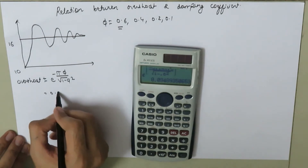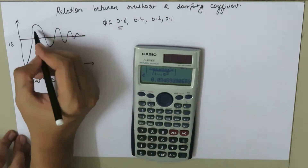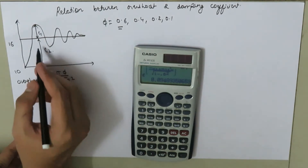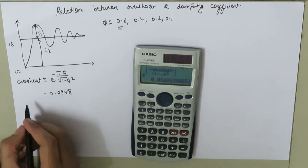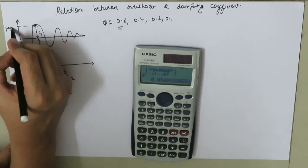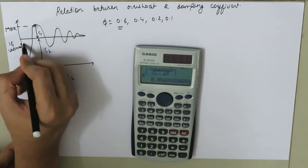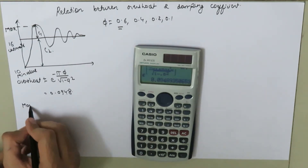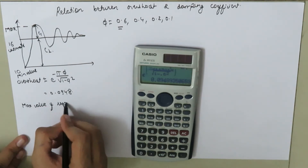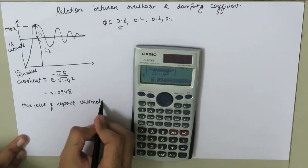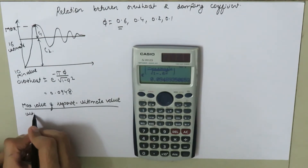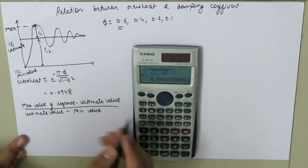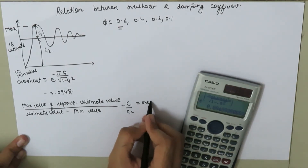The overshoot for phi = 0.6 is 0.0948. From the graph, c1 and c2 are defined such that c1 divided by c2 equals our overshoot. This gives us: maximum value of response minus ultimate value of response, divided by ultimate value minus minimum value of response, equals c1 over c2, which equals our overshoot.